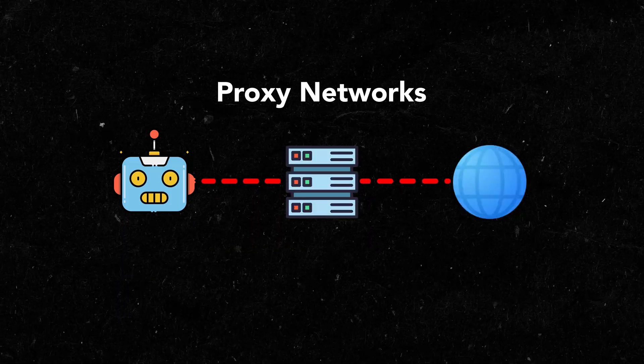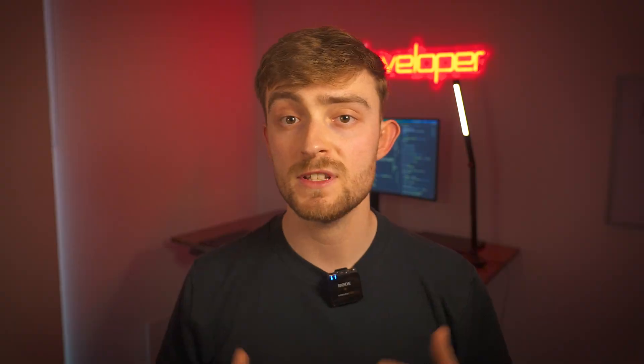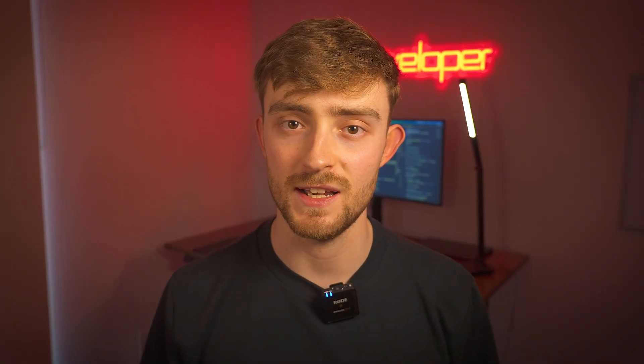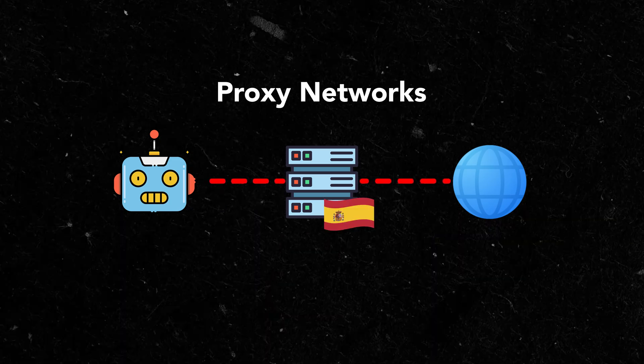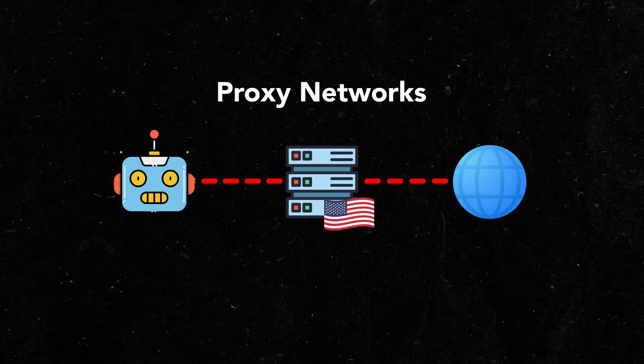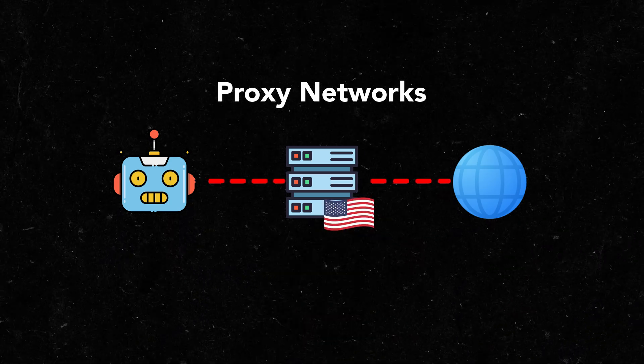There are several powerful tools and techniques that we can use to overcome these web scraping challenges. First, proxy networks. These act as intermediaries between your scraper and the target website. By rotating through different IP addresses, you can avoid rate limiting because the website sees the requests as completely unrelated. And using residential IP addresses from different countries helps to bypass geo restrictions.